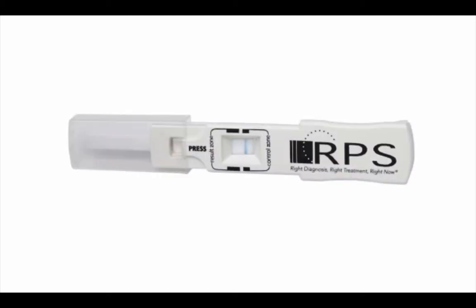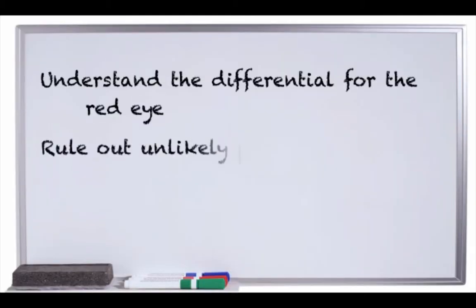With the AdenoPlus, a tear sample is collected from the lower palpebral conjunctiva. Then the sample collector is snapped into the test cassette, which is dipped in a buffer vial. If adequate sample has been collected, a blue control line will be visible. If there is adenovirus present, there will be a red line that appears next to the blue line. Ultimately, this helps you distinguish between adenovirus — the most common form of viral conjunctivitis — and other forms of infectious conjunctivitis.